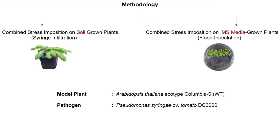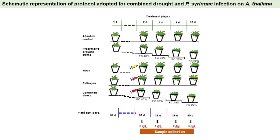To study the role of ATGBF3 under combined stress, we adopted two methodologies: combined stress imposition on soil-grown plants, and combined stress imposition on MS-grown plants. We used the model plant Arabidopsis thaliana ecotype Columbia-0 and the pathogen Pseudomonas syringae pv. tomato DC3000. For soil-grown plants, 31-day-old plants were subjected to drought by water-withholding. As plants reached 40% field capacity, they were inoculated with pathogen and leaf samples were collected at 0, 1, 2, and 3 days post-treatment.